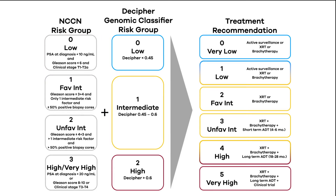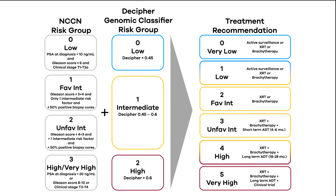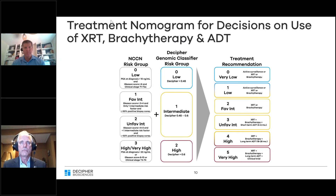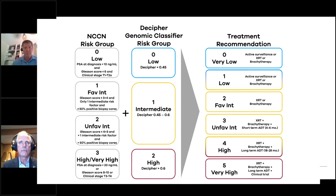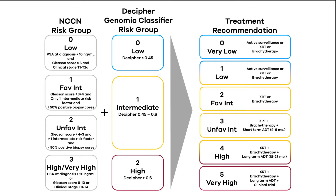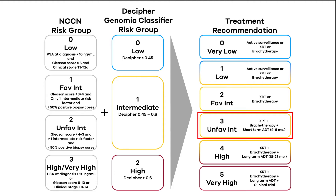When we get into that challenging group of intermediate risk cases — favorable or unfavorable intermediate — that's when we're challenged to ask when is the appropriate use of hormone therapy. The scores Dr. Spratt put forward would be helpful. We continue to offer monotherapy for patients with a sum score of two, favorable intermediate risk. But when they have unfavorable intermediate risk, we consider a short course of androgen deprivation therapy, four to six months.